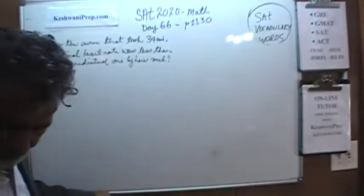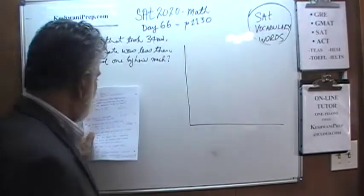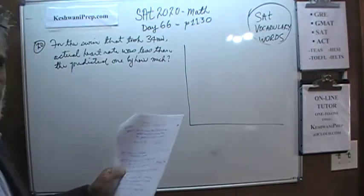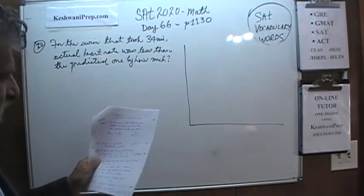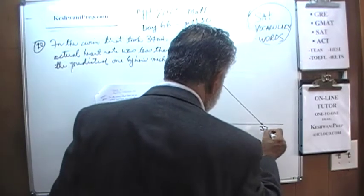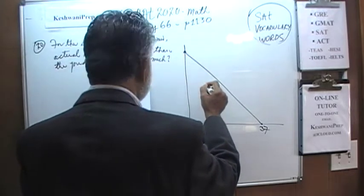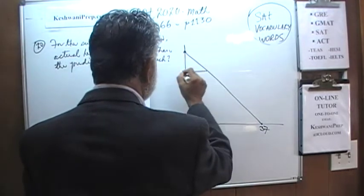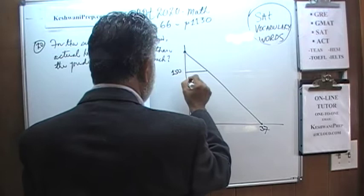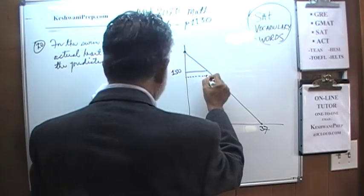They give us a graph here, and the graph looks something like this. You have the book in front of you so you can follow the graph over there — I have to produce something here to solve the problem. The graph goes all the way down to 37, and this is 150 right here. The predicted value is right here at 34.